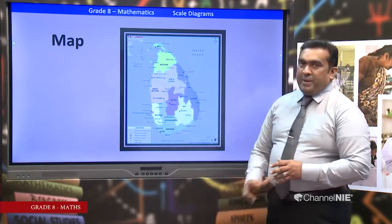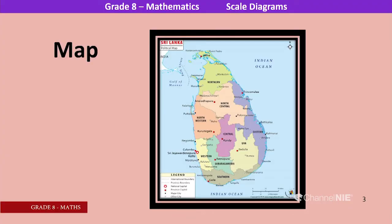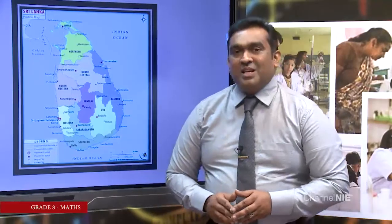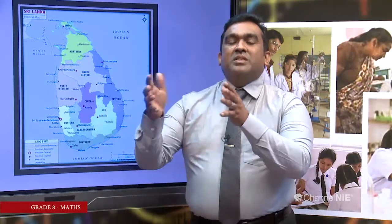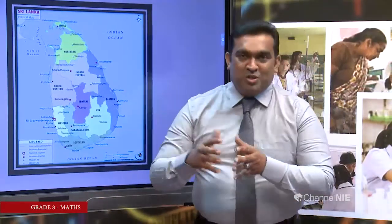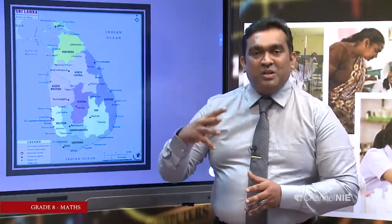You can see a map. This is an example of a scale diagram where the actual measurement is decreased. The distance between Kurunagel and Kandy can be represented using centimeters — kilometers is converted into centimeters. This is an example of decreasing actual measurements, and that is the concept of the scale.